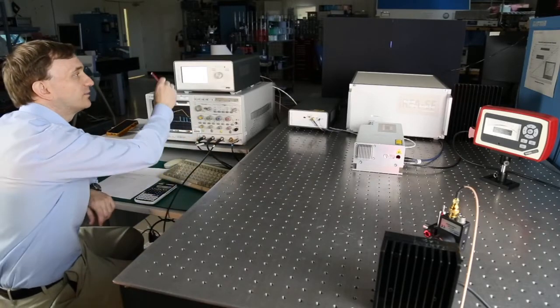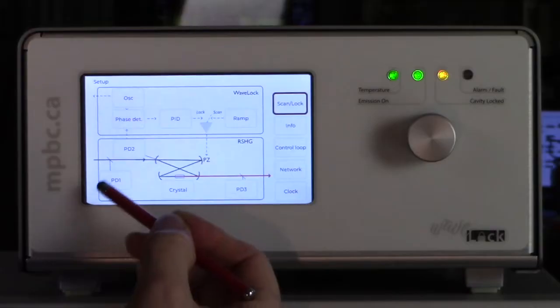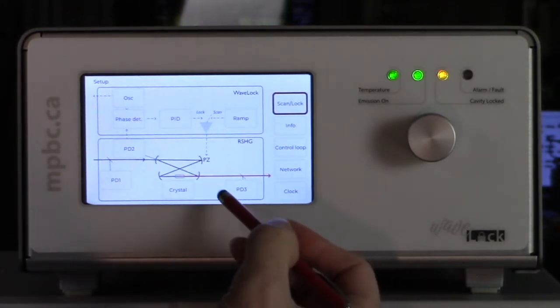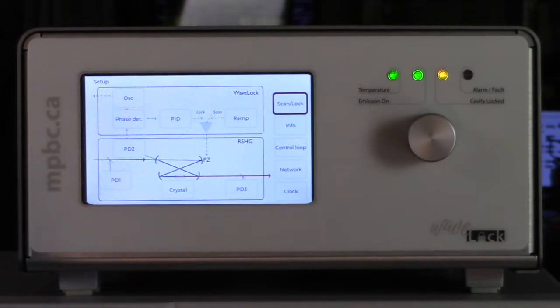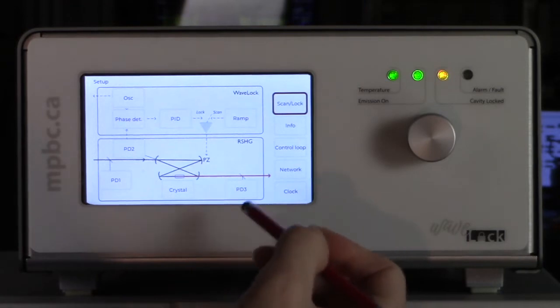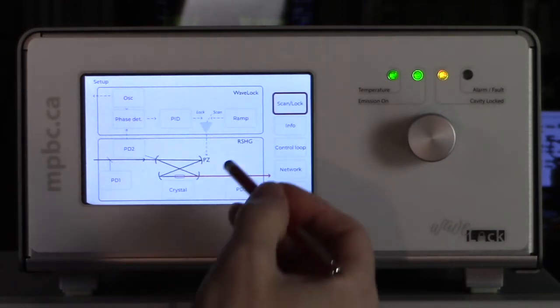We are going to look at MPB's wave-lock box, specifically the configuration for the photodiodes, more specifically this photodiode here that monitors the output. Now we don't take the power from the output directly, instead we take a little portion and we give this to the photodiode here.